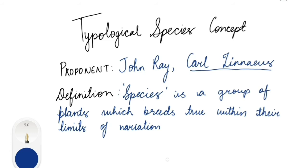Before John Ray and Linnaeus, many philosophers believed in the theory of transmutation — that one group of individuals could evolve into a different kind, for example wheat turning into barley, or crocus into gladiolus. Linnaeus completely refuted this theory, believing all diversity was created from the beginning by the Almighty Creator. According to this concept, the diversities on earth exist as a limited number of fixed types that have no relationships to each other — a belief known as fixity of species.